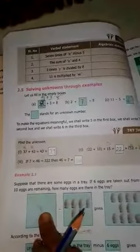There are some eggs in a tray. We don't know how many, so put x. And 6 are taken away, so you get answer 10. So x minus 6 equals 10. This is the algebraic statement. Now you find the x value.